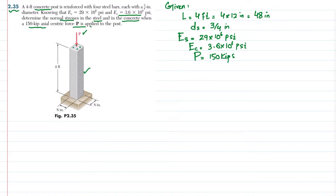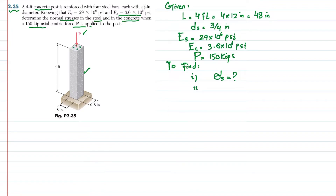What we have to find: in the first part we need to find the normal stress in steel, σ_s, and in the second part we need to find the normal stress in concrete.